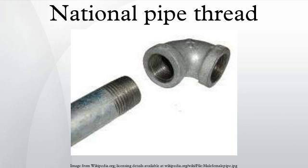Nominal pipe size (NPS) is loosely related to the inside diameter of schedule 40 pipe. Because of the pipe wall thickness, the actual diameter of the threads is larger than the NPS — considerably so for small NPS. Pipe of other schedules with a certain NPS has different wall thickness, but the same outside diameter and thread profile as schedule 40, so the inside diameter of the pipe is therefore different from the NPS.